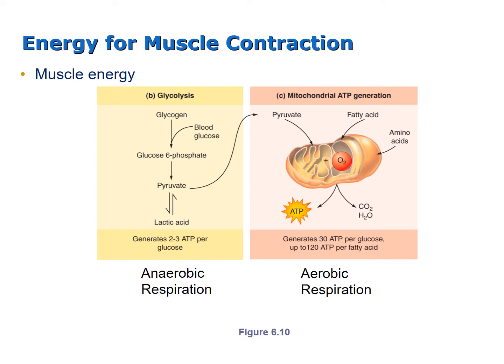If enough ATP cannot be supplied by aerobic respiration, possibly due to lack of oxygen, then additional ATP can be formed by glycolysis. In this situation, more pyruvate can be produced than the mitochondrion can use, leading to a buildup of pyruvic acid, which can drop the pH of the cell. So the pyruvate may be temporarily converted to lactic acid. Lactic acid is also an acid and can drop the pH of the skeletal muscle fiber. It is responsible for the burning sensation felt when working a muscle and can also contribute to muscle fatigue.